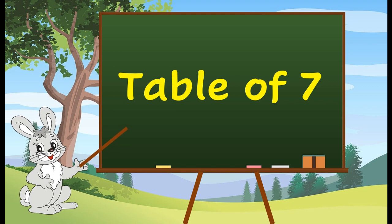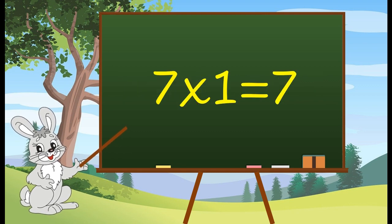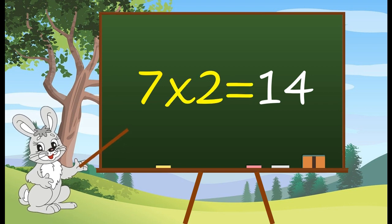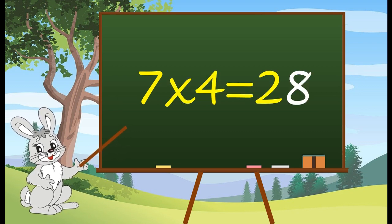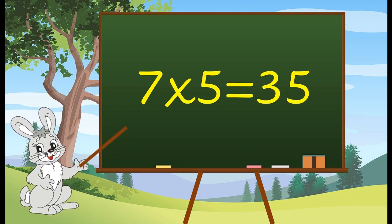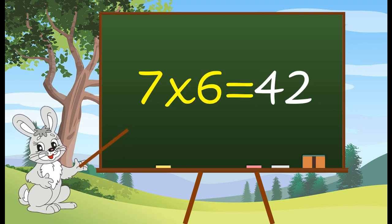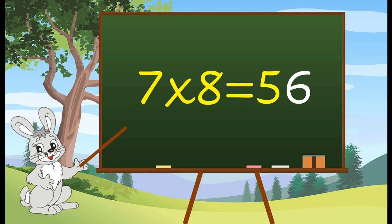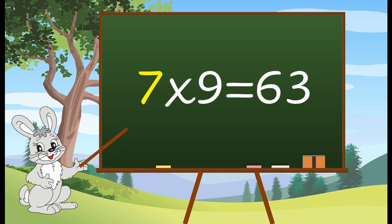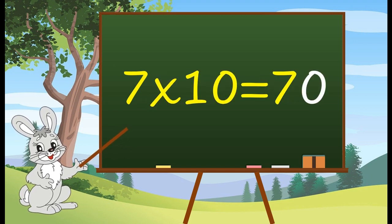Table of 7. 7 1's are 7. 7 2's are 14. 7 3's are 21. 7 4's are 28. 7 5's are 35. 7 6's are 42. 7 7's are 49. 7 8's are 56. 7 9's are 63. 7 10's are 70.